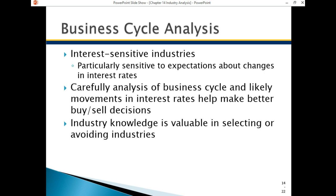Interest-sensitive industries include credit card companies, which are tricky because they can charge higher interest rates but may also have to pay higher interest rates on the money they're borrowing to lend to you. By and large, you may buy less on credit cards during a recession because of higher interest rates. Where interest rates are going is very difficult to forecast, but if you can get an accurate forecast, you can make a lot of money — specifically in bonds more so than stocks.